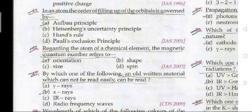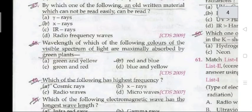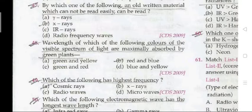Question 46: in an atom of a chemical element, the magnetic quantum number refers to orientation. Question 47: old written material which cannot be read easily can be read by using X-rays. Question 48: wavelengths of which colors of the visible spectrum of light are maximally absorbed by green plants? The answer is red and blue.